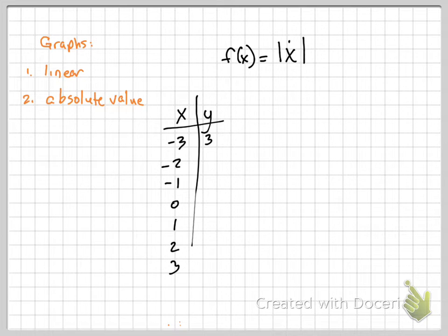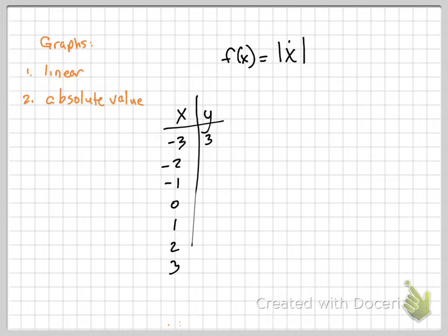You don't have negative distances. If I drive from here to La Grande, it's 12 miles. If I drive from La Grande to here, it's 12 miles. If I drive it in reverse, it's still 12 miles. There's no negative distance. So that's all absolute value is — distance. What's the absolute value of negative 2?